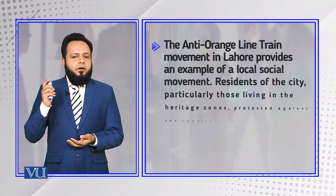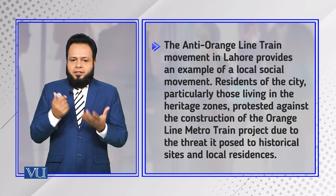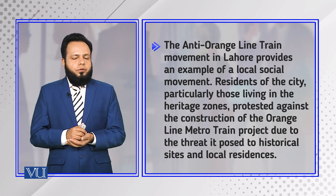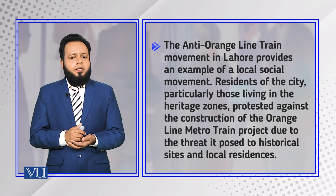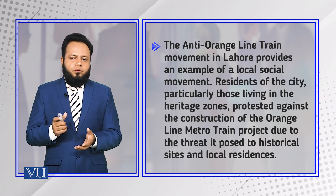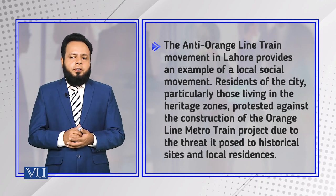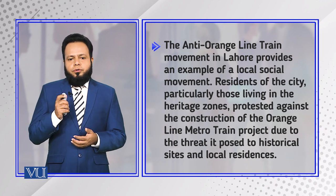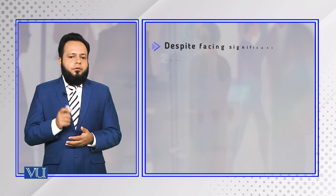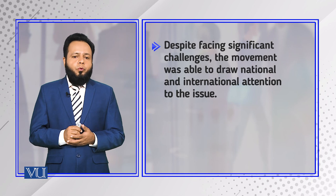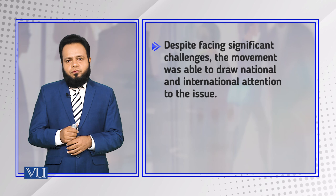The anti-orange line movement in Lahore provides another example of a local social movement. Residents of the city, particularly those living in or near heritage zones, protested against the construction of the orange line due to the threat it posed to historical sites and local businesses. Despite significant challenges, the movement drew national as well as international attention to the issue.